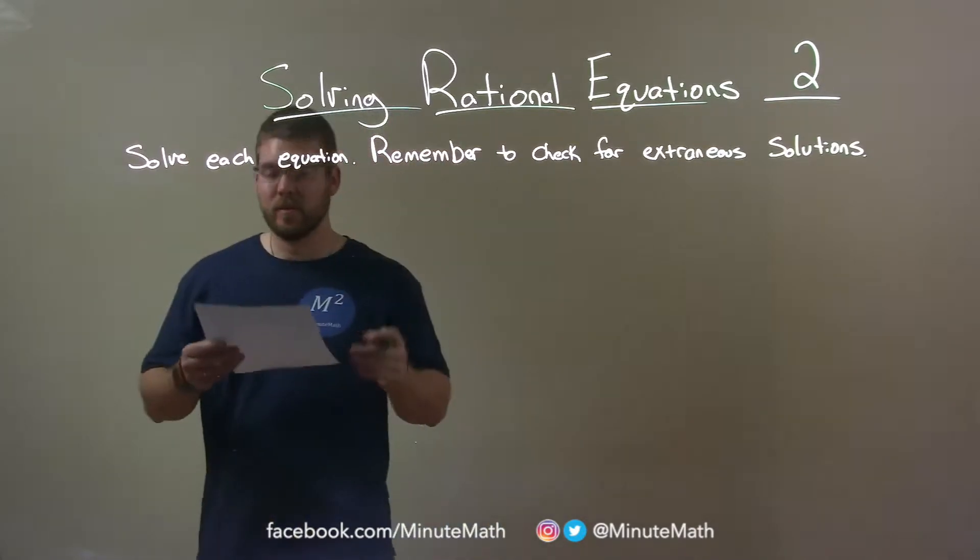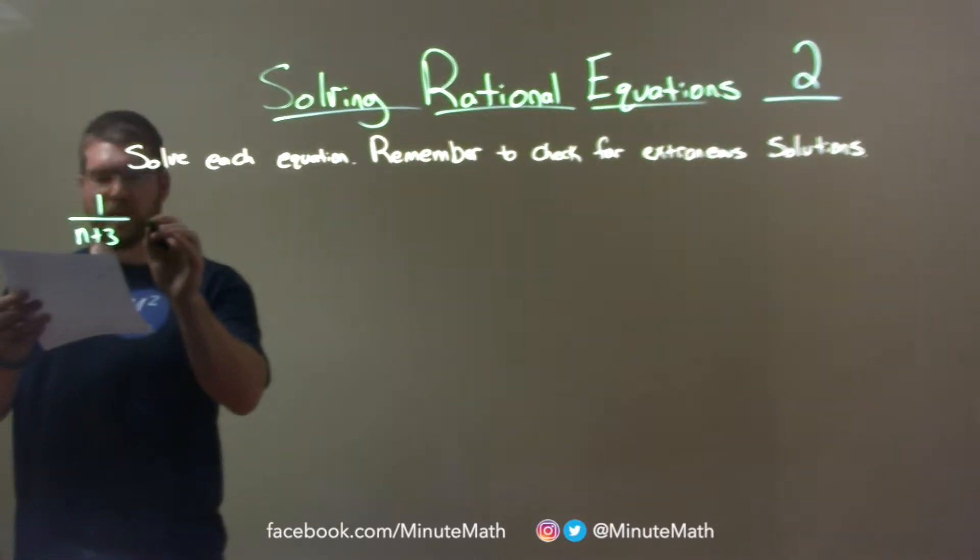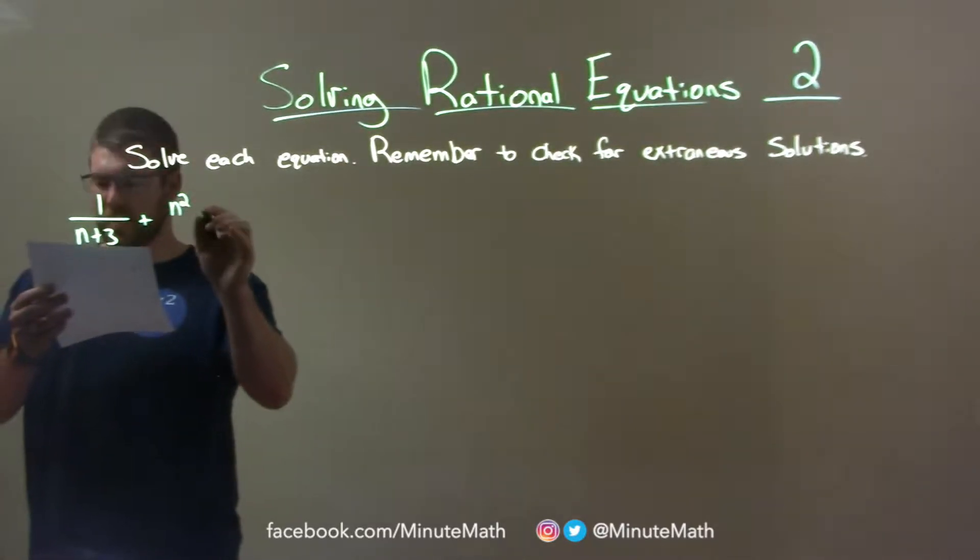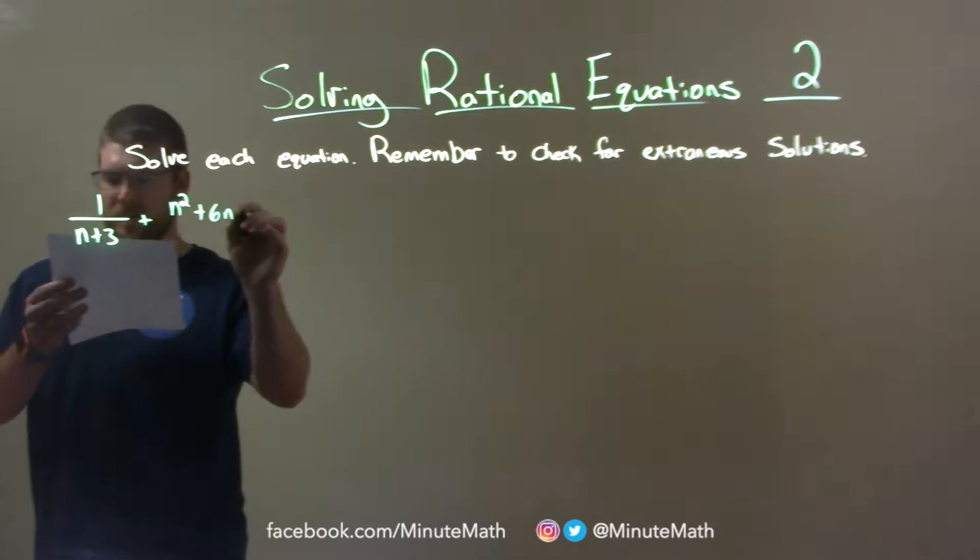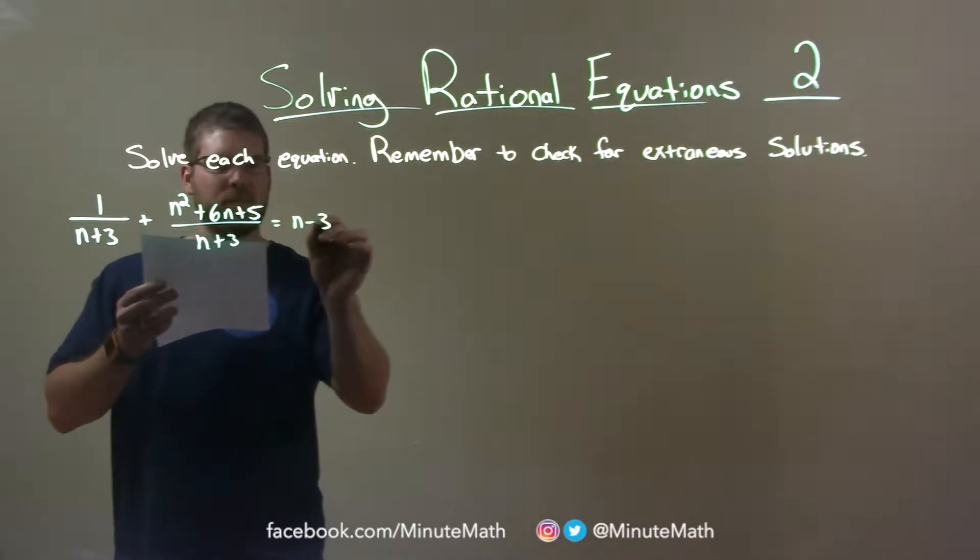So, if I was given this equation, 1 over n plus 3 plus n squared plus 6n plus 5 over n plus 3 is equal to n minus 3.